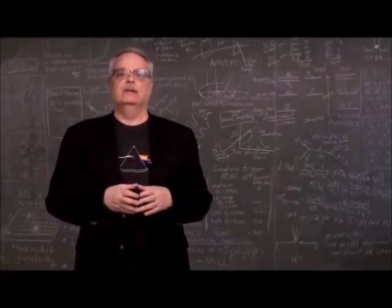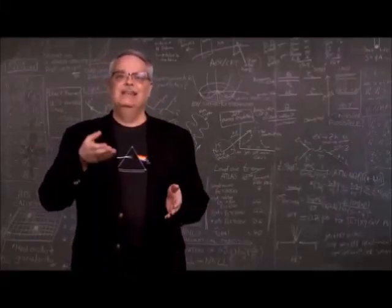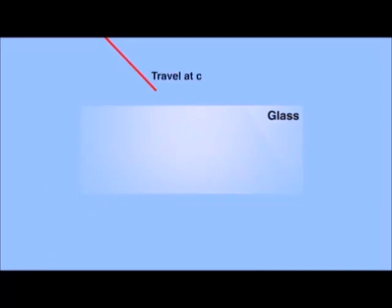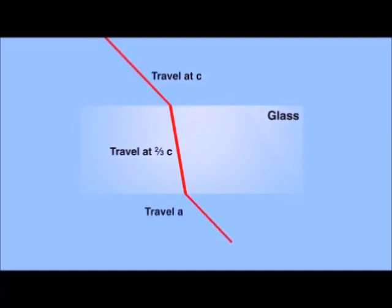I want to focus entirely on the slowing thing. So to do that, let's look at this animation. Suppose you have a piece of glass with an index of refraction equal to 1.5. That means light will travel at two-thirds the speed of light in the glass. If you shoot a laser at the glass, the light will travel at the speed of light until it hits the surface. When it hits the surface, the light will slow down to two-thirds its original speed and change its direction. Once the light gets to the other side of the glass, it will emerge, change its direction, and move again at the speed of light.